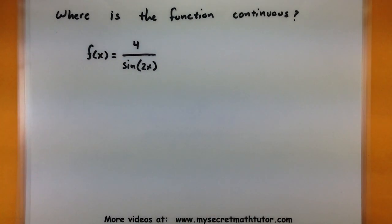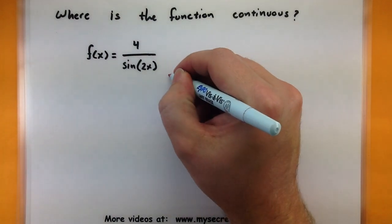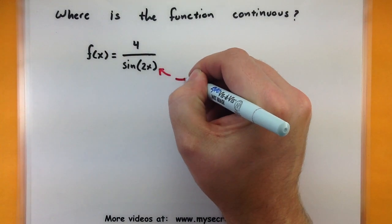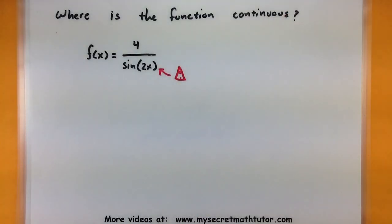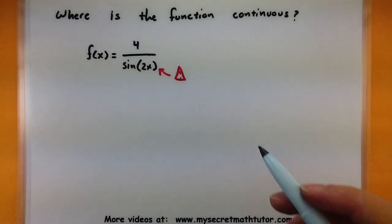Alright this last one is a trigonometric one. Our function is four over the sine of two x. And again we're kind of curious where is this thing continuous? Where is it not continuous? Well since we are dealing with fractions again we're curious where could we possibly get a zero in the bottom? Well since we are dealing with sine we can explore this a little bit.